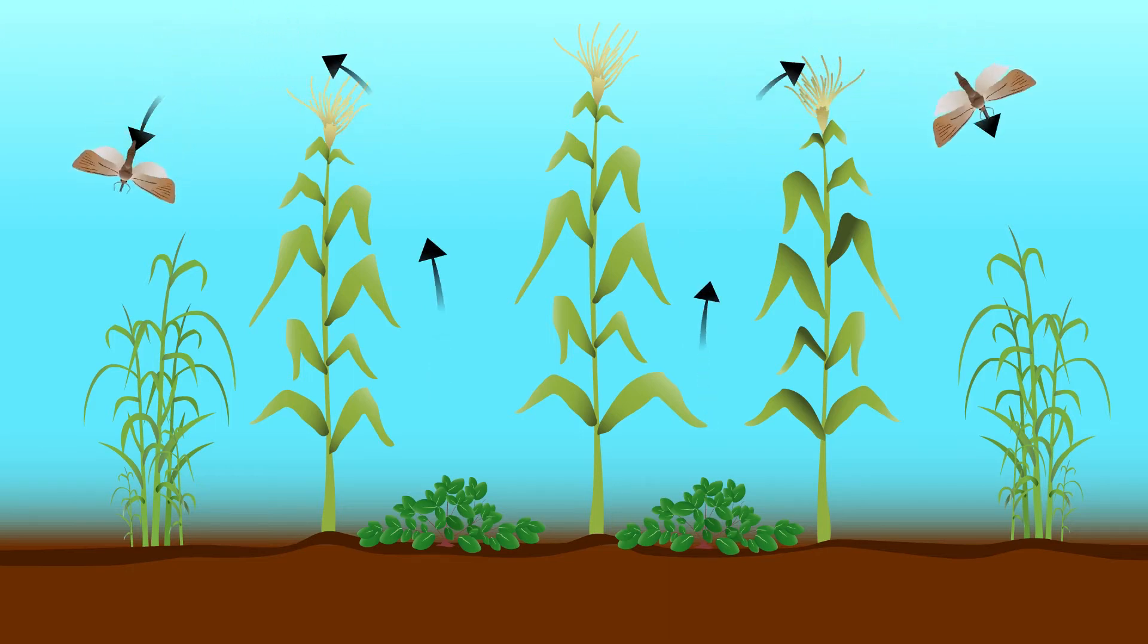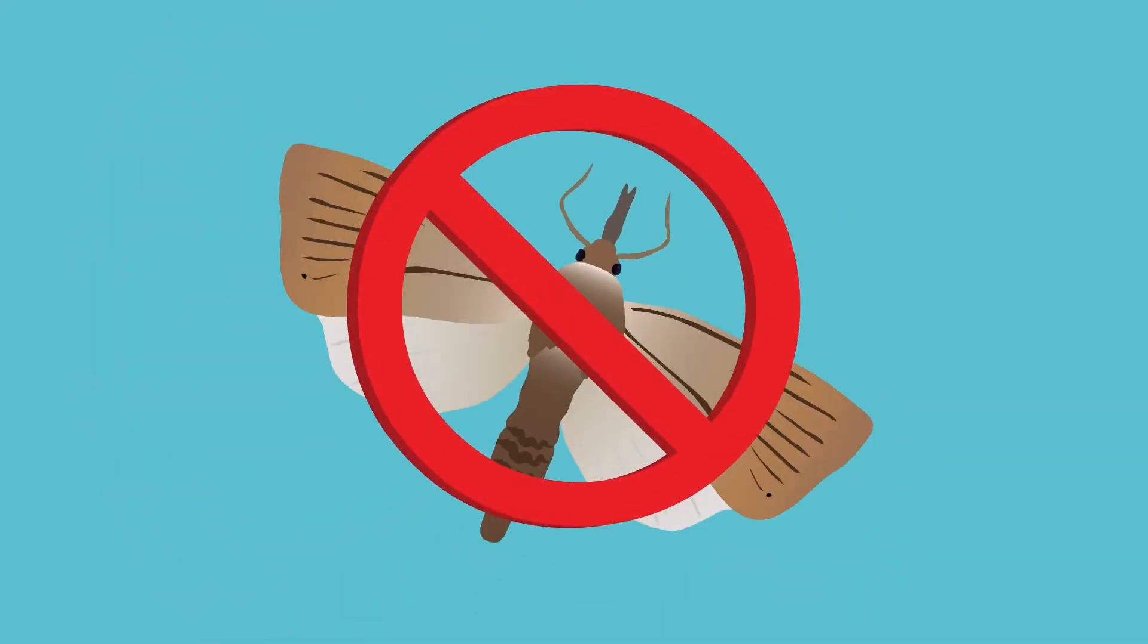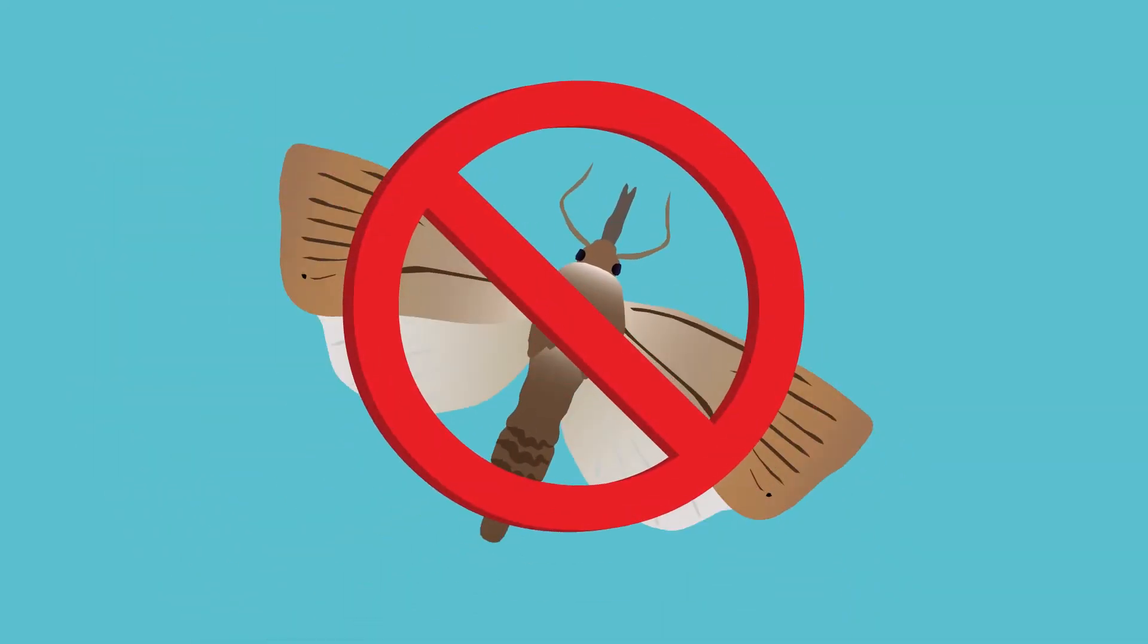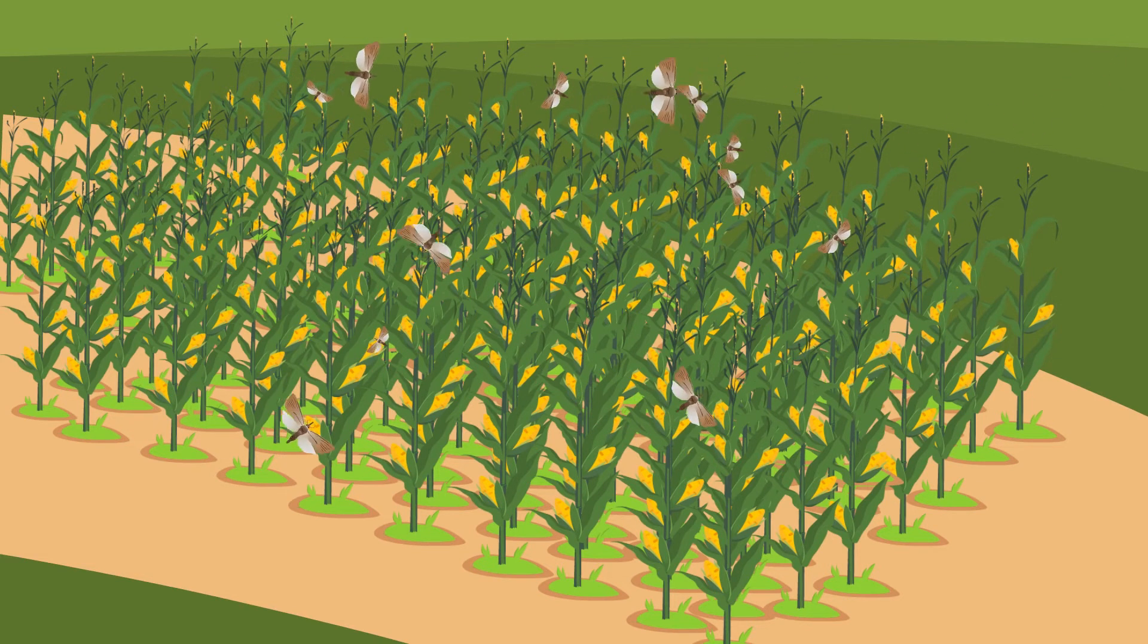The push-pull system is a key element in developing an Integrated Pest Management program. First, let's talk about how the stem borer can destroy your maize crop.